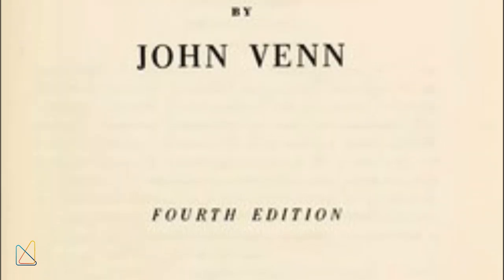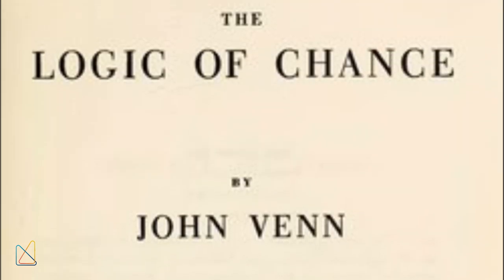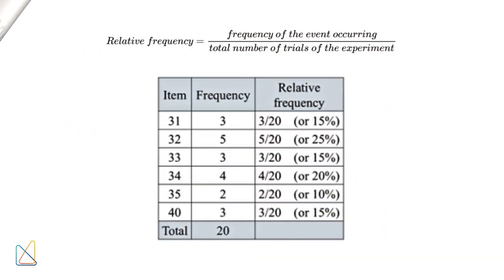Venn's earlier work, The Logic of Chance, published in 1866, argued for the frequency theory of probability. He believed that probability should be determined by how often something is forecasted to occur, rather than relying on educated assumptions.